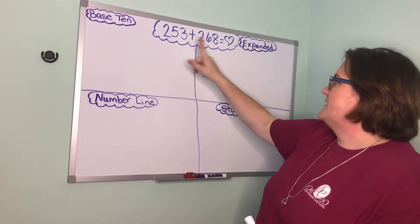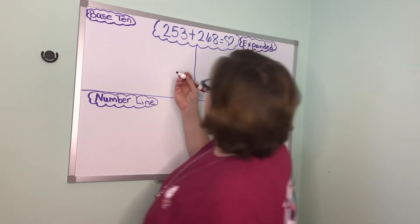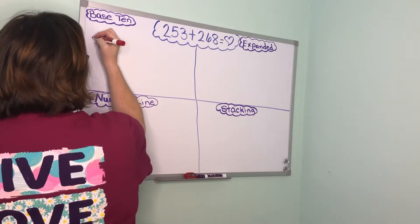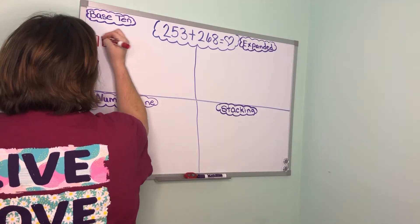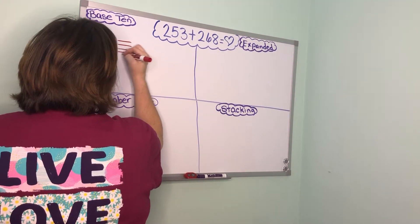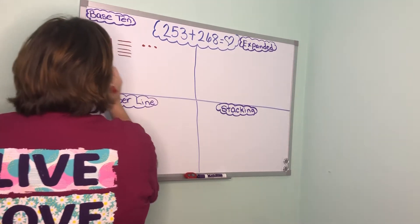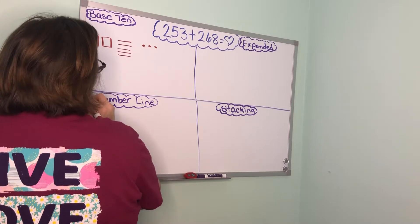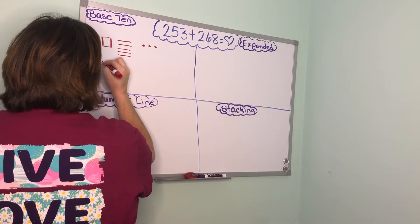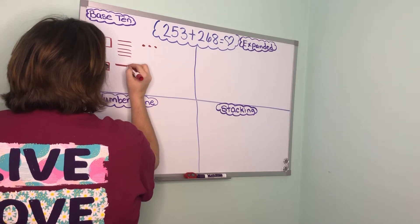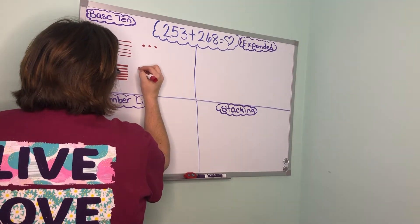We have 253 plus 268. So I'm going to start by drawing two hundreds, five tens, and three ones plus 268. So two more hundreds plus six tens, then eight ones.